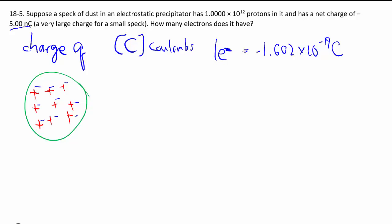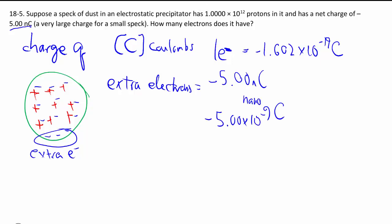When you actually have a net charge, it is the result of an imbalance. So here's some extra electron that will give you the net charge. This has to proceed in two steps. First, based on the net charge, we can find out how many extra electrons there are. It's equal to a net charge of negative 5 nanocoulombs, nano being 10 to the minus 9. This is nanocoulombs.